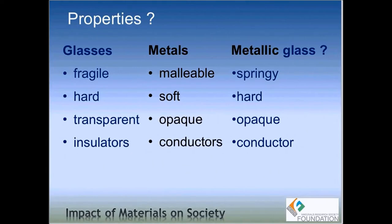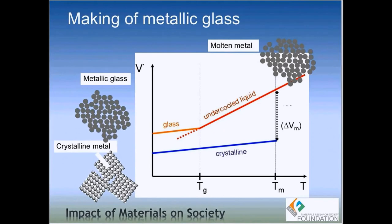Now that we understand a lot about metallic glasses, the question is: how do we make one? There are a lot of different techniques, but the most commonly used method is rapid cooling from a liquid state. This can be understood from a volume versus temperature graph. On the y-axis we have volume and on the x-axis temperature. If we take a metal and heat it above its melting temperature Tm, it becomes liquid. If we then start cooling it, depending on how fast we cool, we can make either an amorphous structure or a crystalline structure.